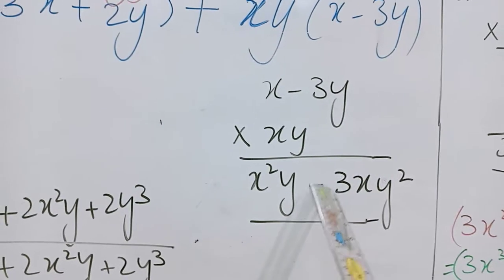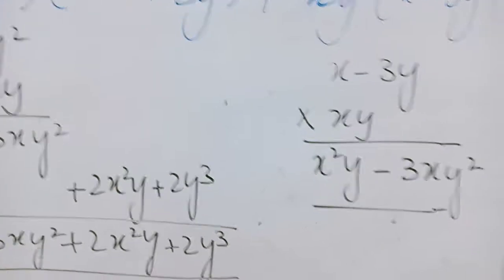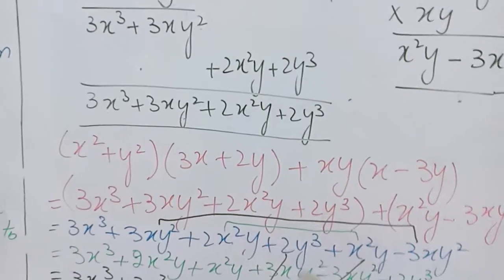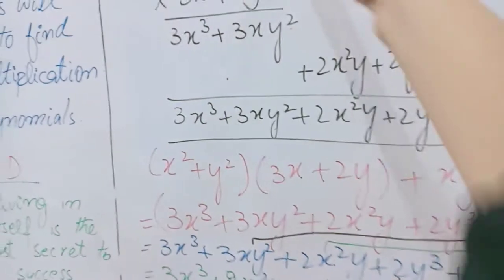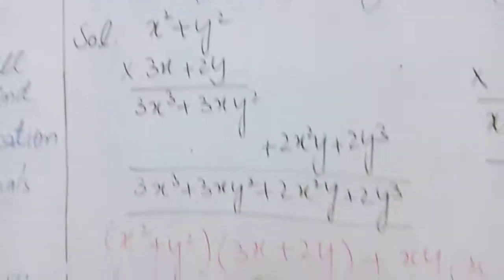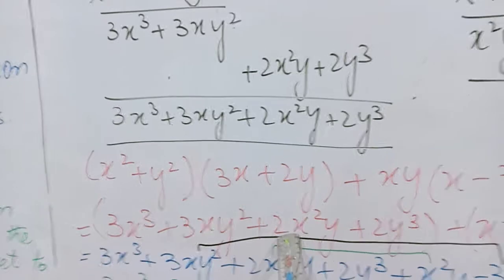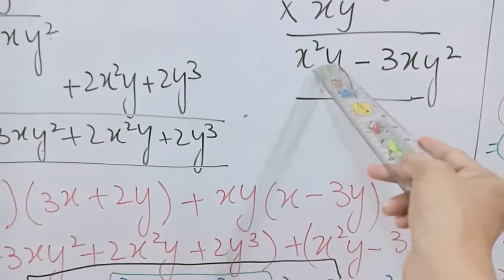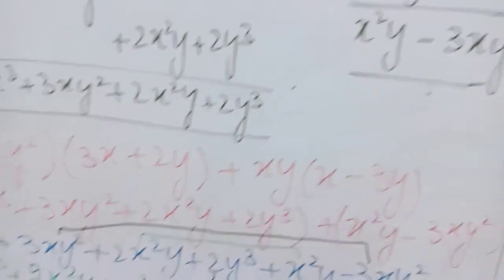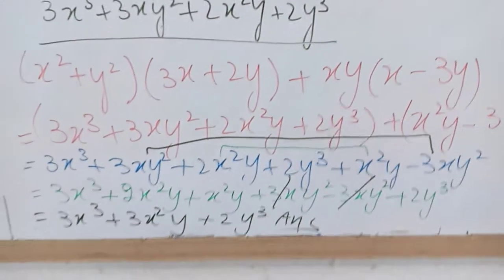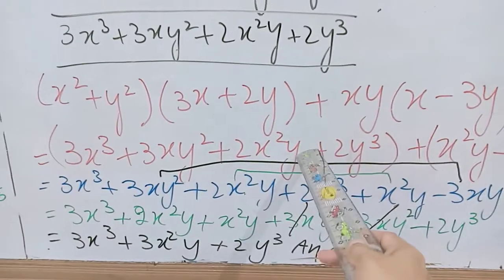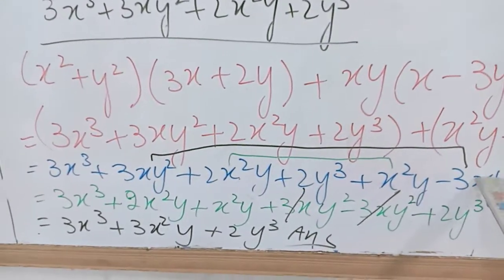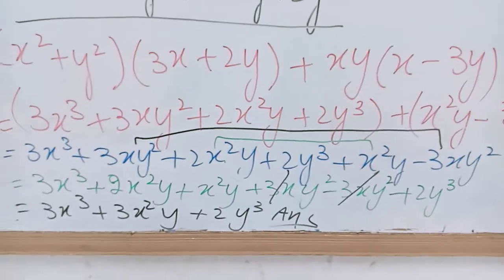After multiplication of these two values, we have to write the question again. If we have to write the answer, then we will write the answer in brackets. Plus sign as this, we will multiply the answer. After this, we will open the brackets. What do we do?